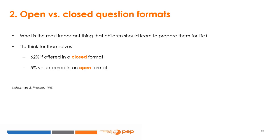Here are some open-format versus closed-format questions. Respondents were asked, 'What is the most important thing that children should learn to prepare them for life?' The answer 'to think for themselves' was given 62% of the time in a closed-format response, but only volunteered 5% of the time in an open format. Which is better? It depends on the survey goal.